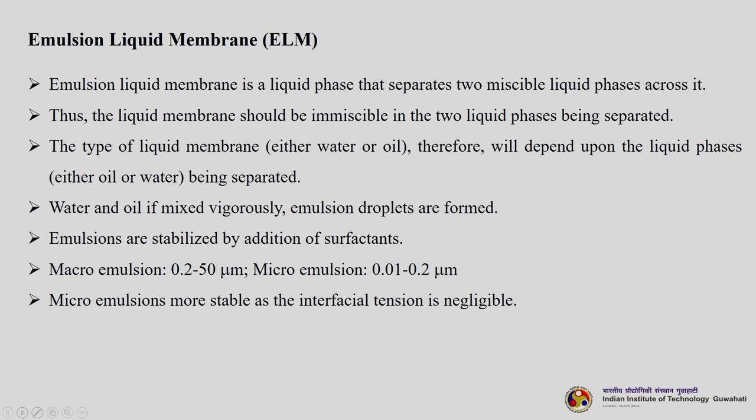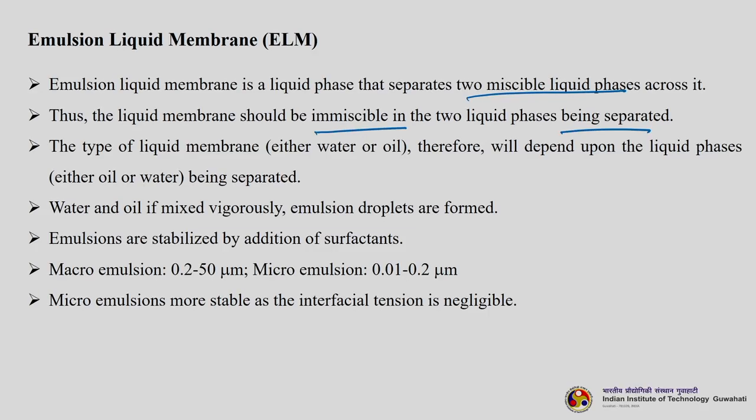The next type is emulsion liquid membrane (ELM). An emulsion liquid membrane is a liquid phase that separates two miscible liquid phases across it. The liquid membrane should be immiscible in the two liquid phases being separated. The type of liquid membrane — water or oil — depends upon the liquid phases being separated. Usually it is oil-water type applications, basically oil-water separations.